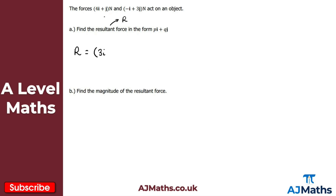For the j component: 1j plus 3j gives 4j. So the resultant force R is 3i plus 4j newtons. Remember the resultant force is a force, so we need newtons. That's in the correct form pi plus qj, so that's part A complete.